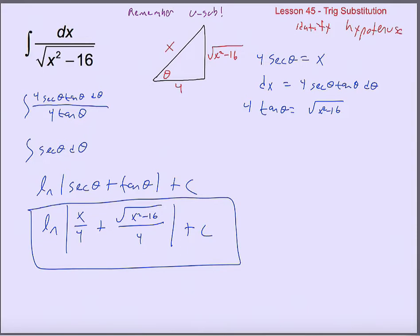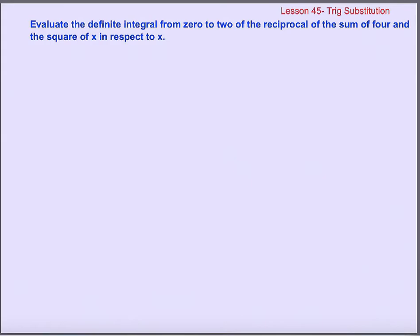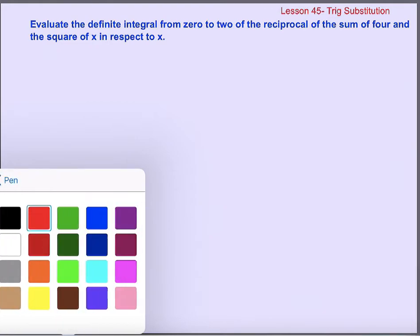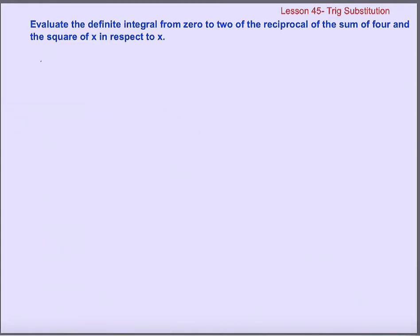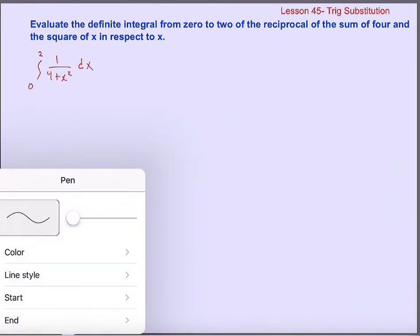We can look at one more example in this video, and the next video will be a slightly different situation. We want the definite integral from 0 to 2 of 1 over 4 plus x squared, with respect to x. You might notice this one doesn't have a square root, which makes it a little different from the examples we saw. But that doesn't change our strategy.